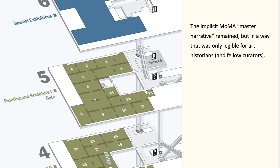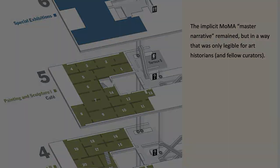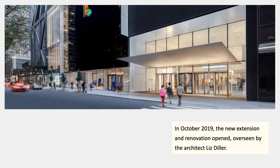So in 2010, the MoMA master narrative was still visible, but after the first couple of galleries it was really only legible for art historians. And especially if you weren't aware that there was a story to be told, you could easily think that Van Gogh's Starry Night and the Henri Rousseaus were also part of the story. In October 2019, there was a new extension and renovation, and that was the moment MoMA decided to finally renounce the master narrative they had been known for since the 1920s and 30s.